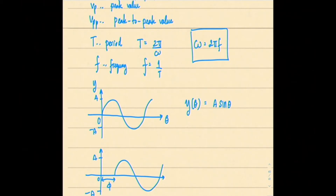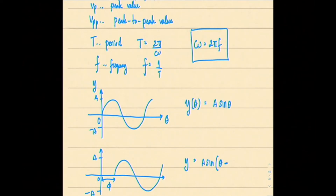...and it's shifted by an angle φ from the original. The way I remember it: if it starts late — it's delayed — that's a negative feeling, like students coming in late. So the angle becomes θ minus φ. The function is y = A sin(θ − φ).